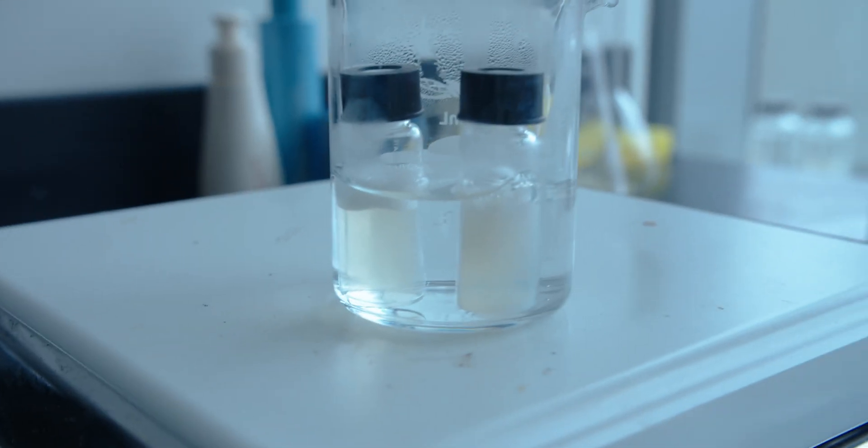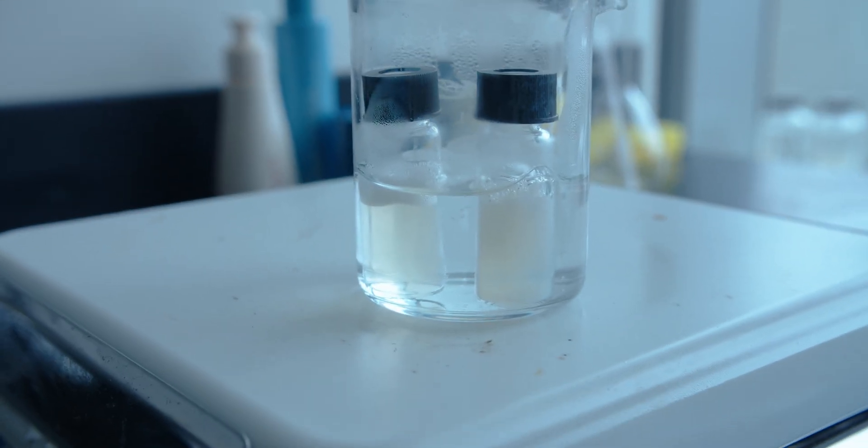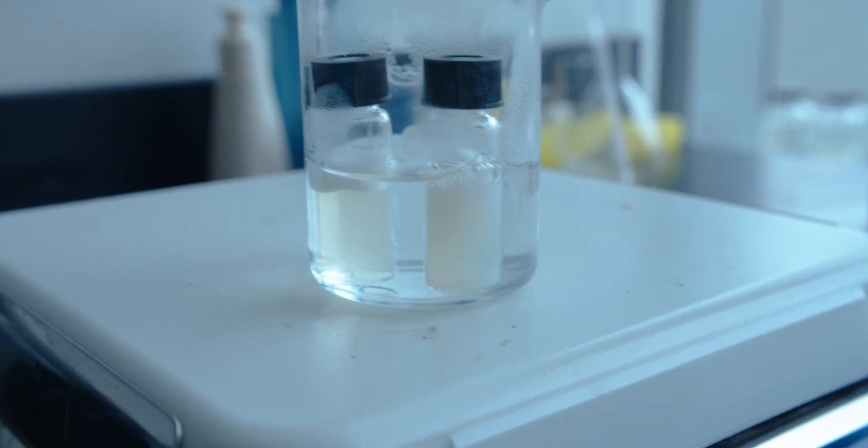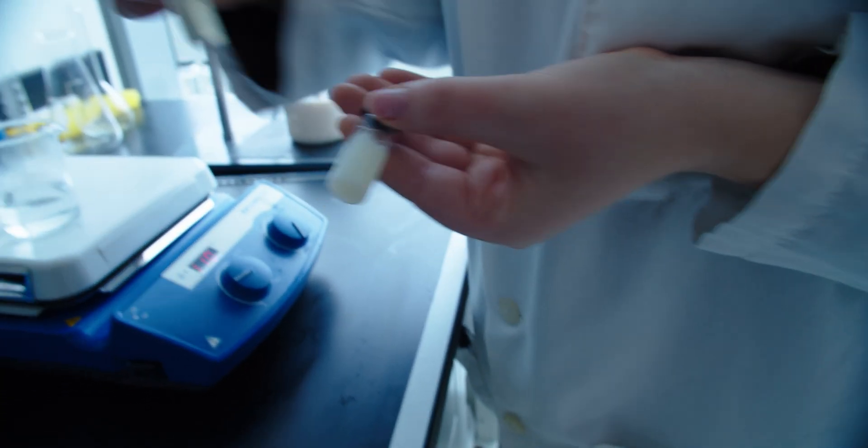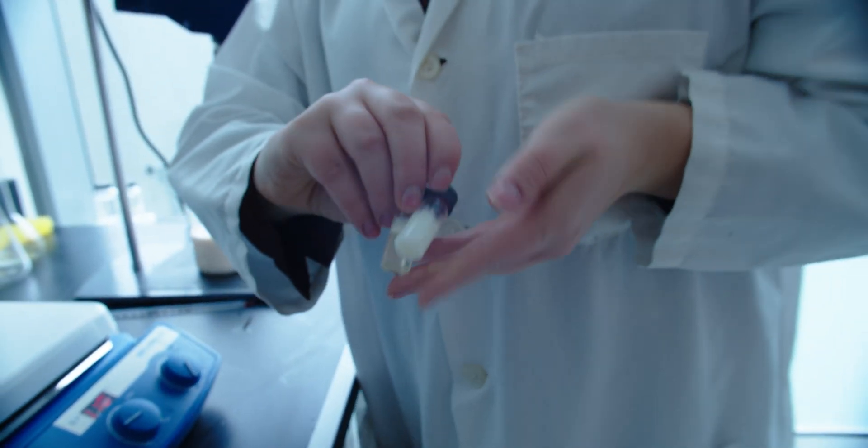So you can start to see that one turn white, solid white, just like a cooked egg, while the one on the left stays liquid. We have a cooked egg and a not cooked egg. And that's because that ectoine was protecting the proteins.